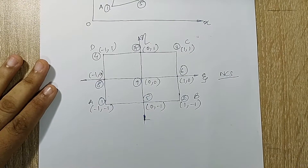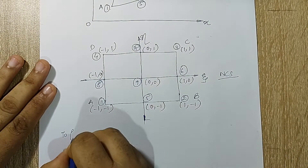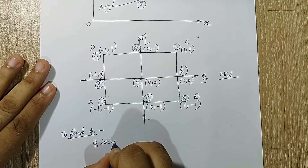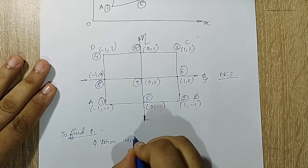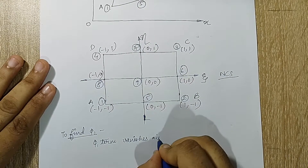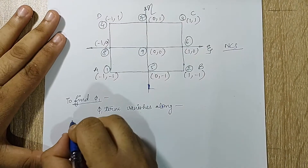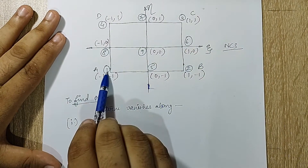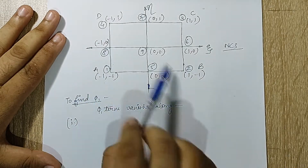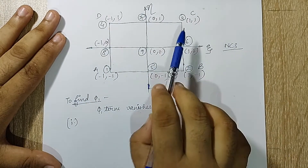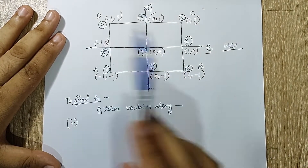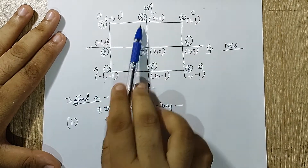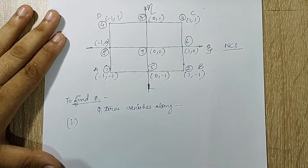The procedure is the same as that of the eight-noded quadrilateral, so I will start with the φ₁ term. We are supposed to take four lines. Node one appears along lines one-two and one-four, so I cannot take those two lines. I will take lines two-three, three-four, six-eight, and five-seven — in these lines node one does not appear.